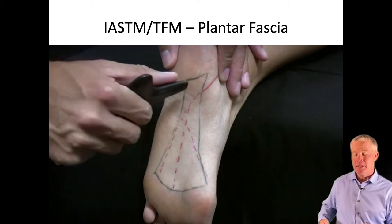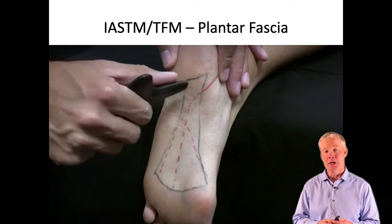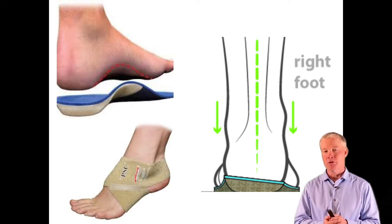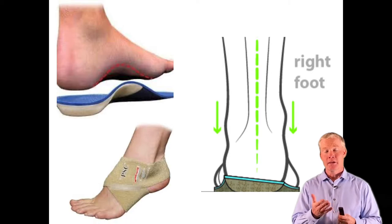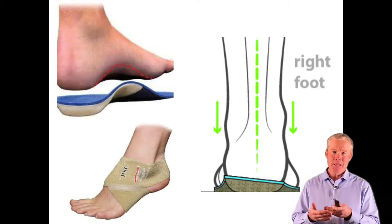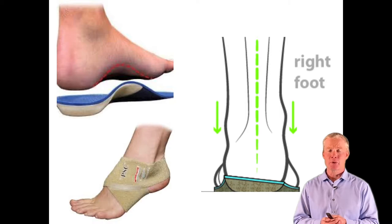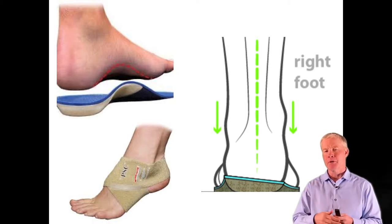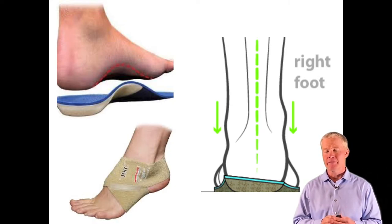Make sure the patient has adequate arch support. Ultimately we'd like that to happen through strength of the posterior tibialis, but sometimes in the short run they'll need an orthotic, a Faber foam wrap, a tensoplast wrap, or even a medial heel wedge — which tips the foot up a little and takes some stretch off the plantar fascia and the Achilles tendon.